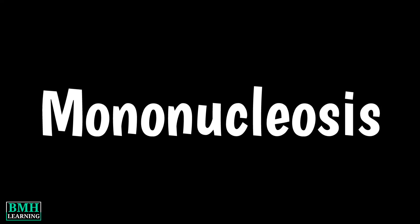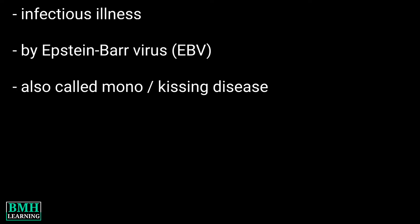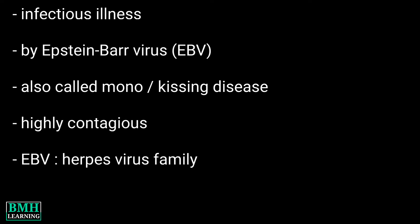Hello friends, welcome to BMH Learning. This video is about mononucleosis. Mononucleosis is an infectious illness that's usually caused by the Epstein-Barr virus. It's also called mono or the kissing disease. The disease is highly contagious. EBV is part of the herpes virus family, and most people are exposed to it at some point in their lives.